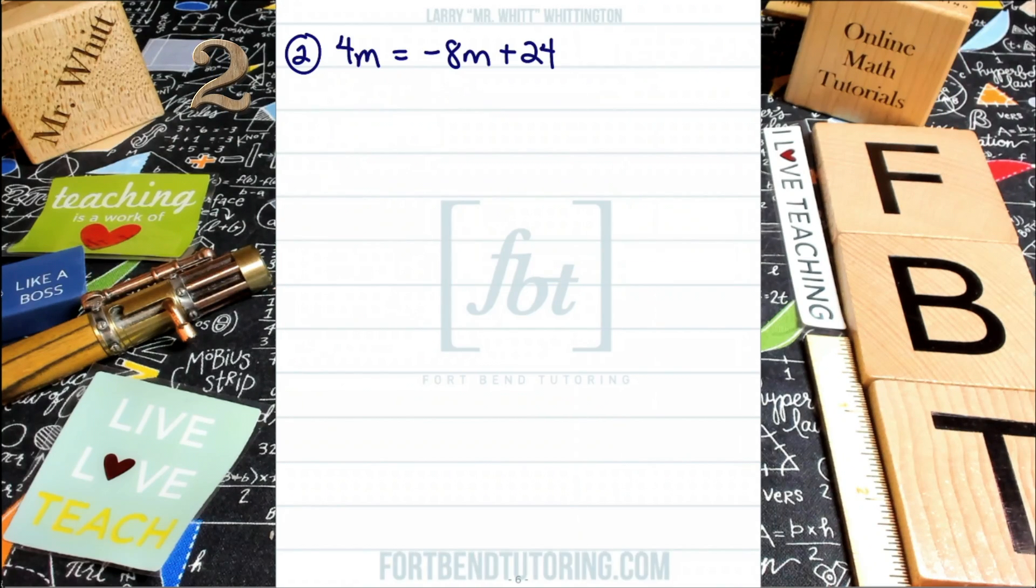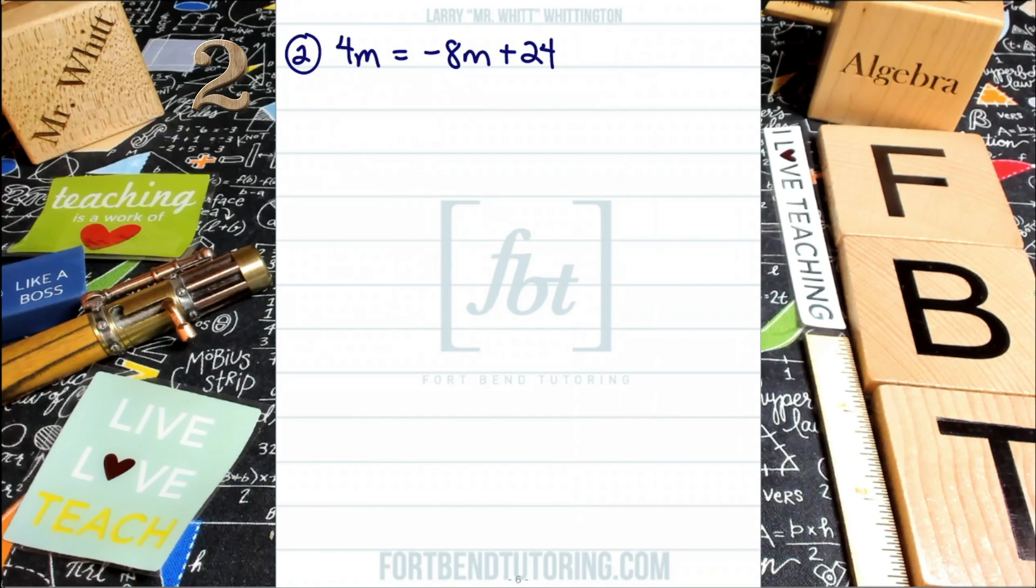Let's move on to our next problem. Here in problem number two, we have 4m equals negative 8m plus 24. Notice that in this example, your variable that you're trying to isolate is located on the left and the right side. We're going to isolate the variable; we're going to choose a side for the variable to remain.